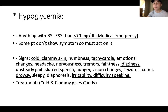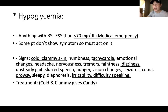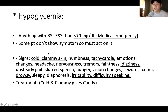Hypoglycemia: hypo means low, glycemia means sugar — so low blood sugar. Anything less than 70 is a medical emergency. If you go to clinical and check someone's blood sugar and it's less than 70, run to your nurse and report it. Signs of hypoglycemia include cold, clammy skin, numbness, tachycardia, emotion changes, headache, tremor, and faintness. Remember: cold and clammy skin and significantly increased heart rate are the key signs.